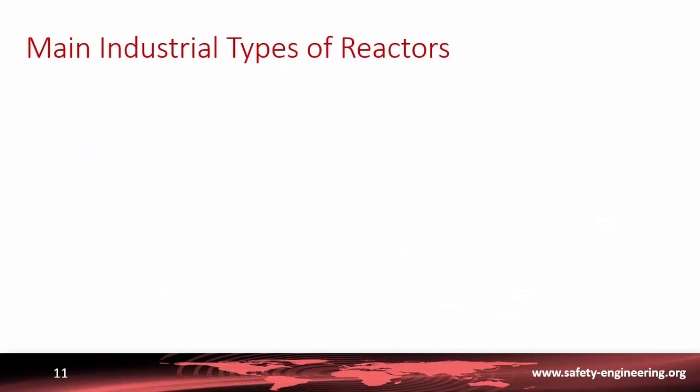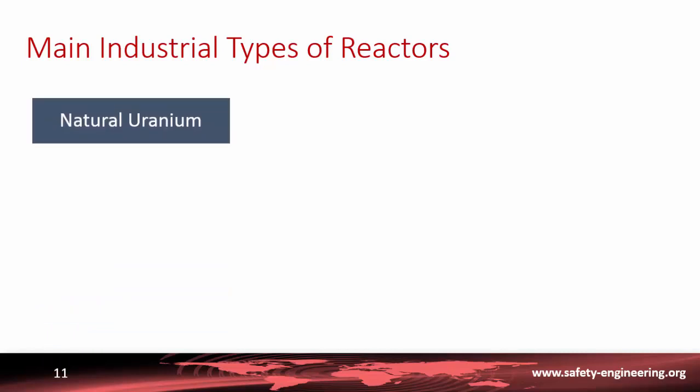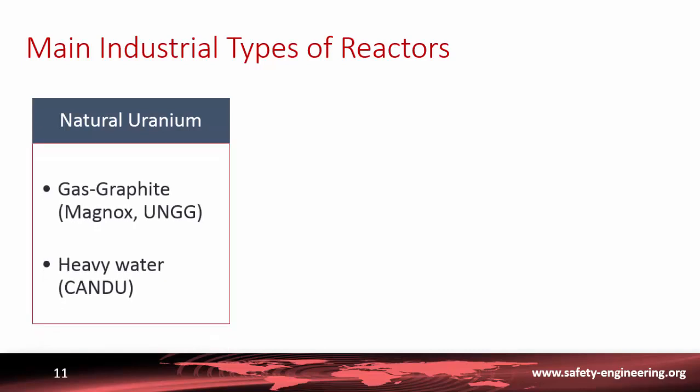Several types of reactor have been explored during the research period. The first type uses natural uranium as fuel. The first category uses gas as coolant and graphite as moderator — they are called Magnox, built in the UK — or uranium natural and gas-graphite in France. Another type using natural uranium has heavy water as both coolant and moderator. These reactors have been built mainly in Canada and are called CANDU.